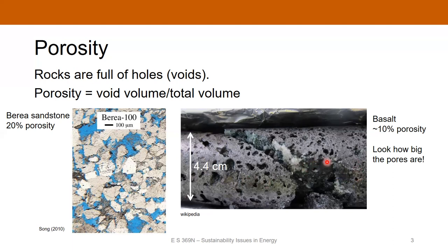On the other end of the spectrum, this is basalt — an igneous rock. When the basalt cools, a lot of the time it'll develop vesicles and other void space where gas exsolves during the cooling and solidification process. This particular sample only has 10% porosity. But look at how big those pores are. This is a 4.4 centimeter diameter core. So you're looking at half a centimeter size pores. Those are pretty big. So these could also be a good way of storing CO2.